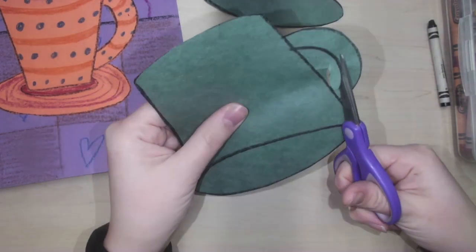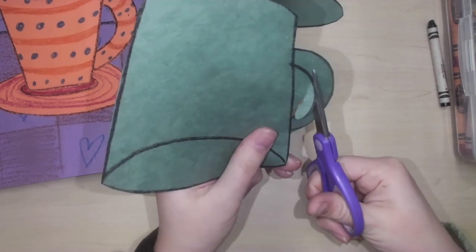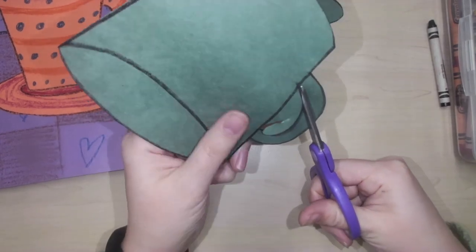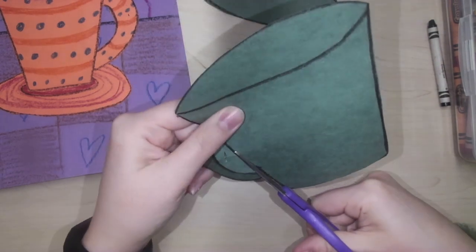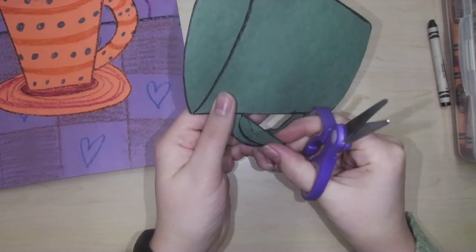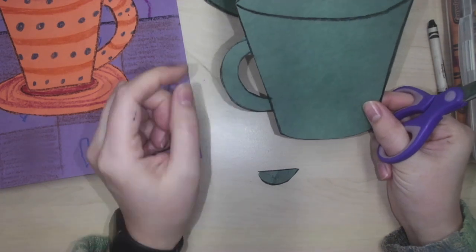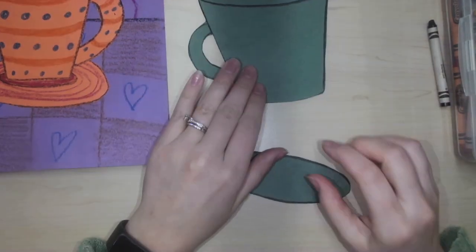Remember, turn the paper, not your scissors, to cut on the lines to get out the inside of your handle. There, I just cut a hole in the middle of my paper.